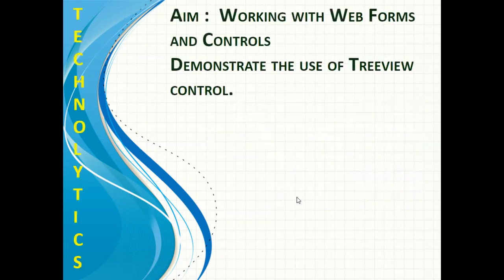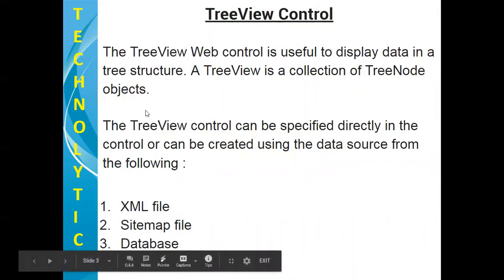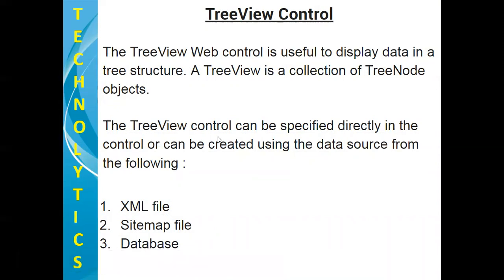In today's video, we are going to demonstrate the use of Tree View Control. The Tree View Web Control is useful to display data in a tree structure. A Tree View is a collection of tree node objects. The Tree View Control can be specified directly in the control or can be created using a data source from the following options: Number 1, XML file; Number 2, Sitemap file; and Number 3, Database file.